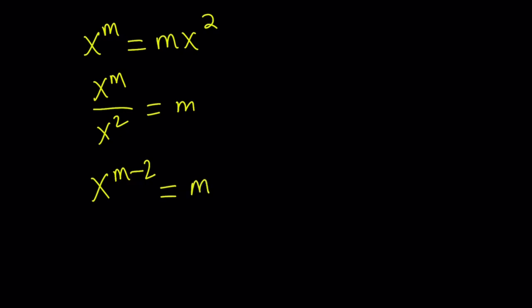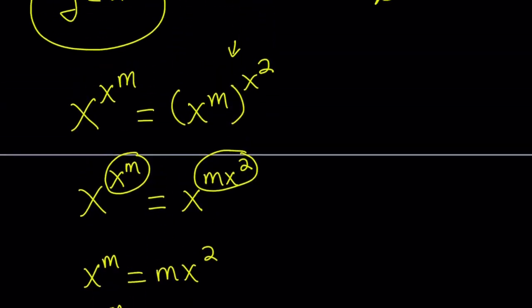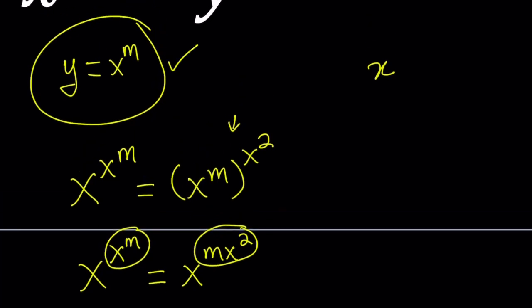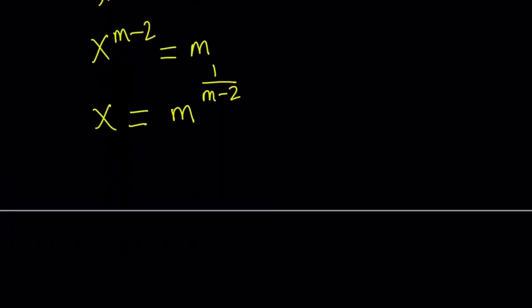From here, if you raise both sides to the power one over m minus two, you get x equals m to the power one over m minus two. We're basically using m as a parameter, parameterizing this equation, and then solving. To find the y values, remember we assumed y equals x to the power m, so just raise x to the power m to get the y value.